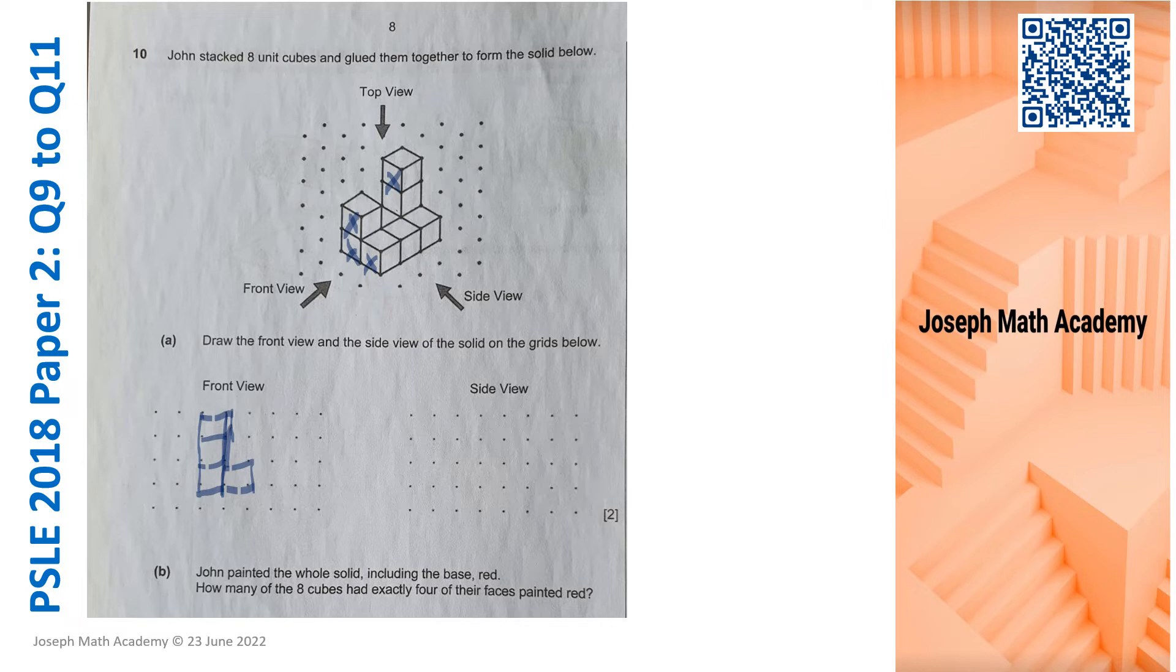Now, what about the side view? I'm going to use another color. And from the side view, I can see this, this, this, this, this, this, and this. So let's draw what I have dotted. Three over here. And here, there should be two more. Stack up. That's it.